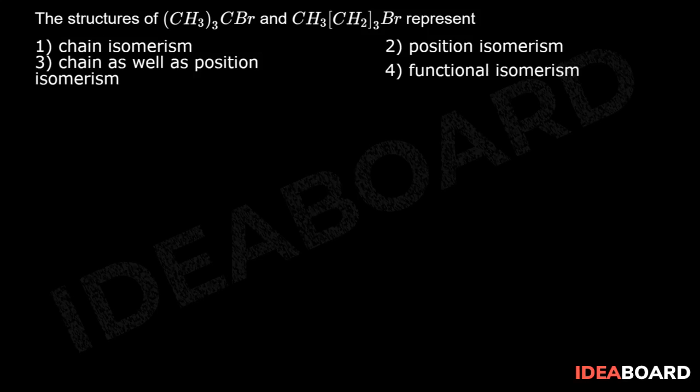The structure of CH3-C(CH3)2-CBr and CH3-CH2-CH2-CH2-Br represent: First one is tertiary butyl bromide, which can be written as, and second one is n-butyl bromide.